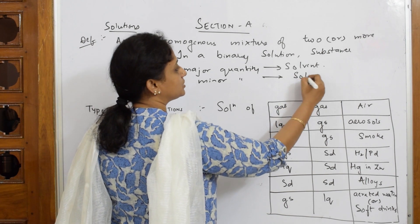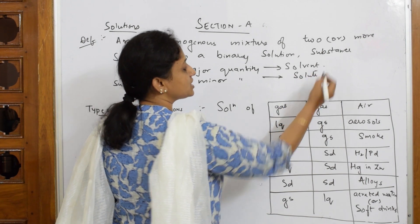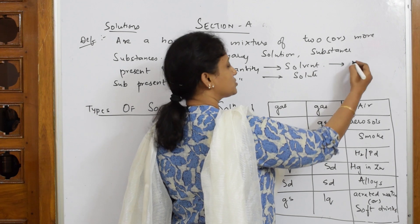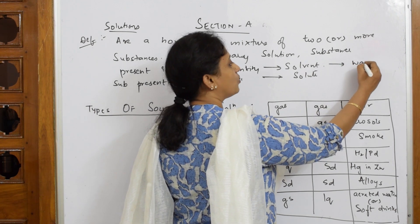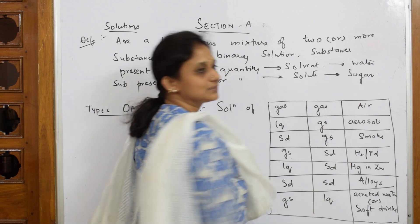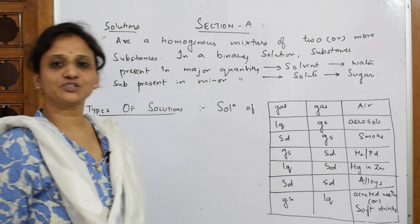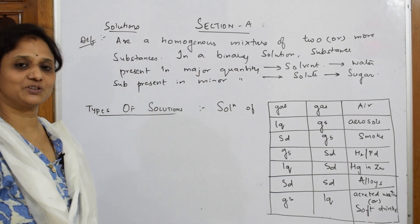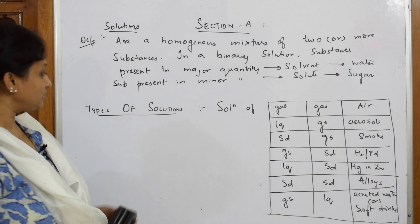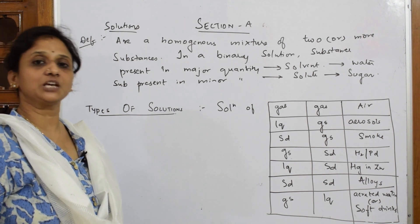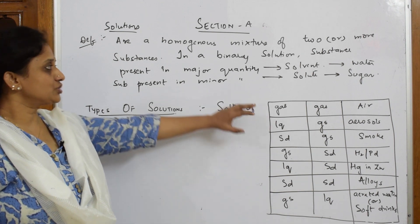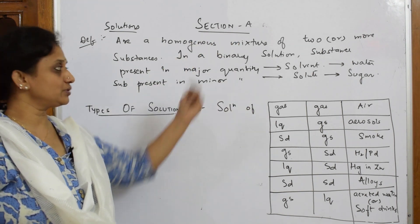In sugar solution, the solvent is water and the solute is sugar. This is the basic definition for solution. When I come back to the classification of types of solutions — if it has only two components, it is a binary solution.